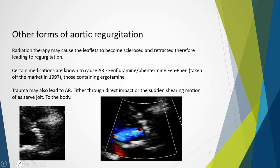There are other forms of aortic regurgitation to consider. Radiation therapy can cause the leaflet to become sclerosed and retracted, leading to aortic regurgitation. Certain medications are known to cause aortic regurgitation, including fenfluramine and phentermine — formerly known as fen-phen, taken off the market in 1997 — and drugs containing ergotamine. These destroy the connective tissue and structure supporting the body of the leaflets. Trauma may also lead to aortic regurgitation, whether from direct impact hitting the valve or a sudden shearing motion creating a jolt to the body.